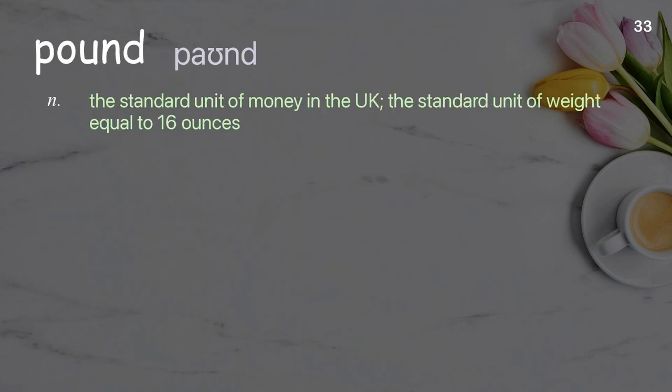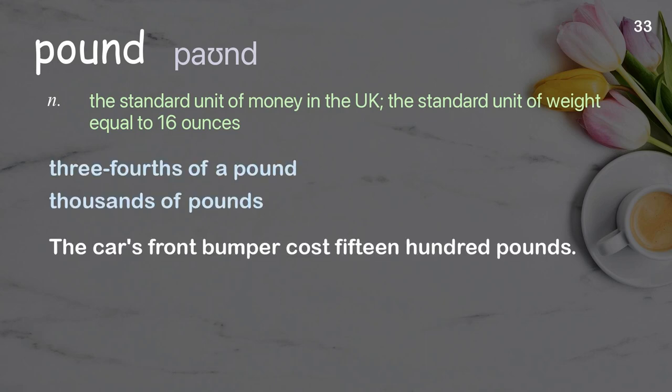Pound: the standard unit of money in the UK; also the standard unit of weight equal to 16 ounces. Examples: three-fourths of a pound, thousands of pounds. The car's front bumper cost 1,500 pounds.